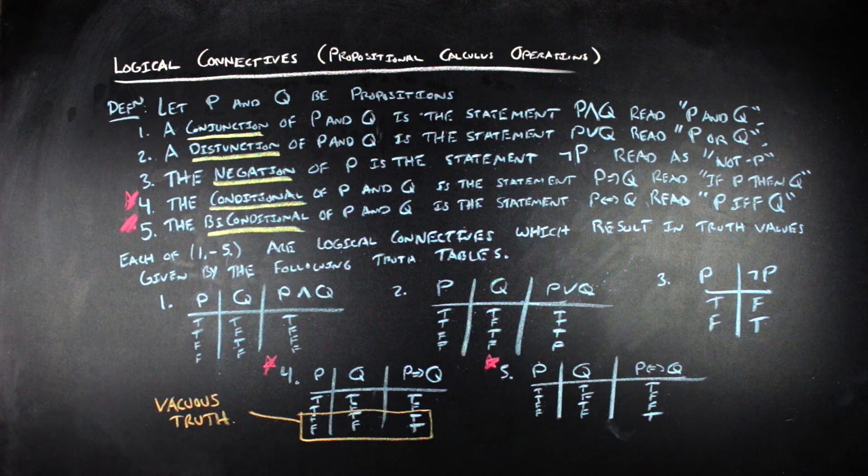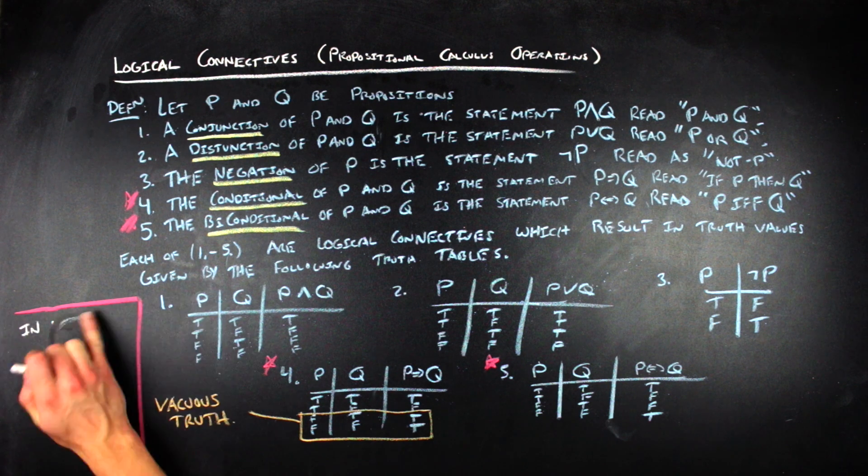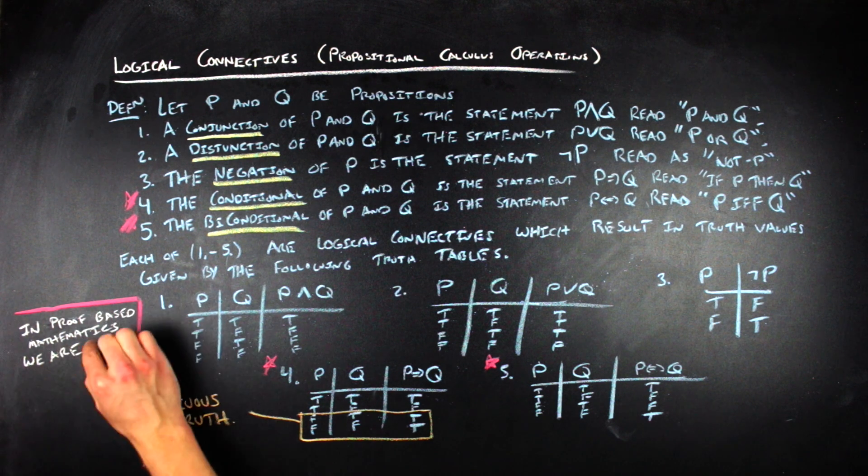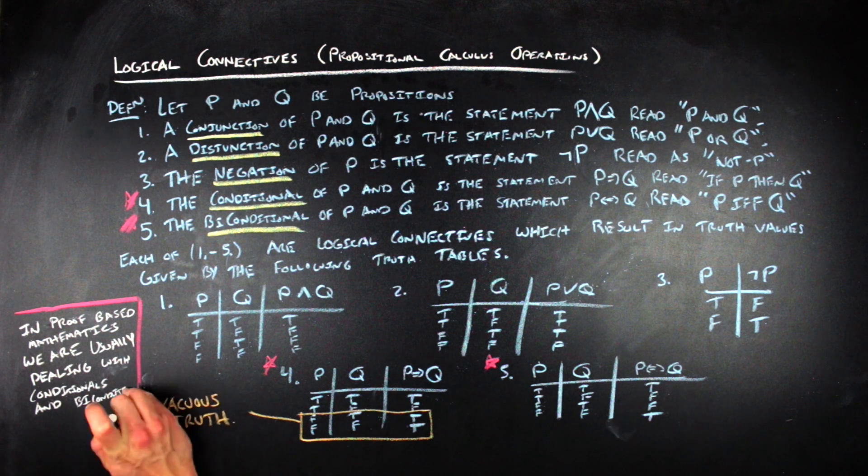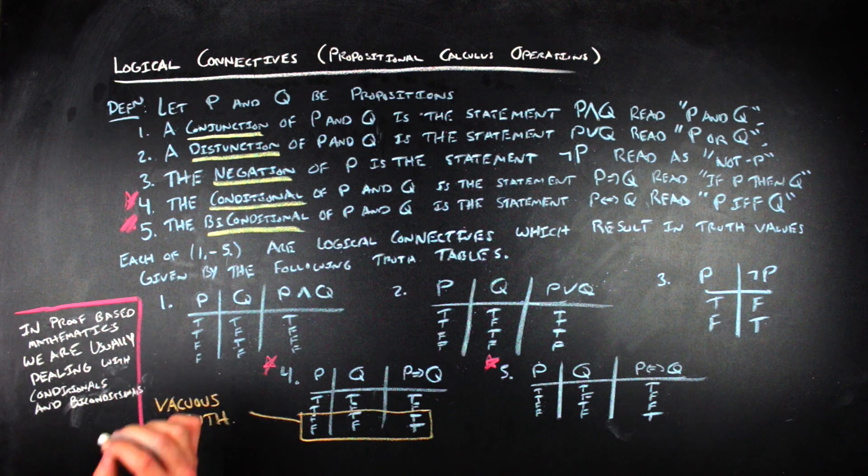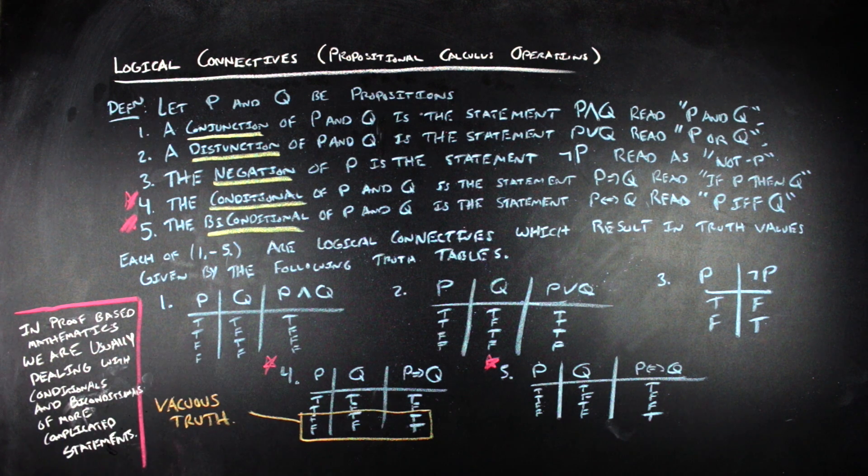In mathematics, at least when you're proving things, usually you're looking at conditionals and biconditionals between other compound statements that have been connected using other logical connectives. So understanding the conditional and biconditional logical connectives, at least for being able to prove things in mathematics, is pretty important. So now that we have a few operations that interact with propositions, and we can start doing some mathematics with, or at least computational mathematics, with these operations, we can start to think about more structural questions about propositions.